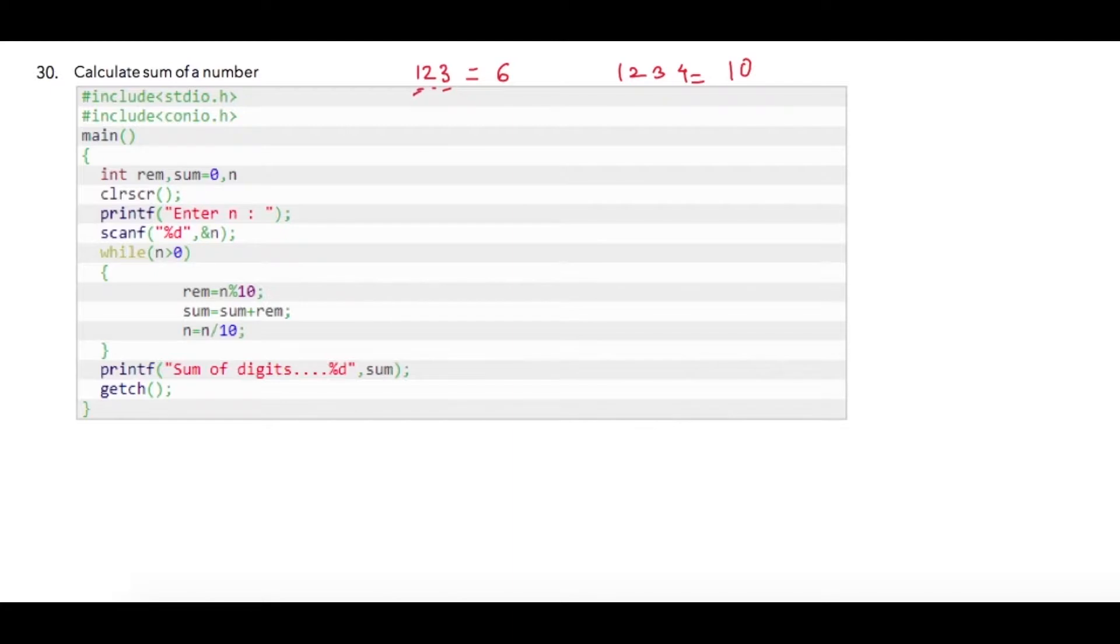Again, I'm using rem as my remainder variable. I'm adding this variable sum, I'm initializing it to zero, and n is a variable which we will be using to store the user's input.